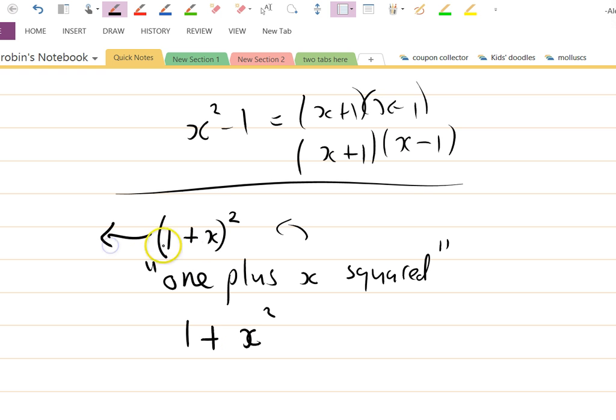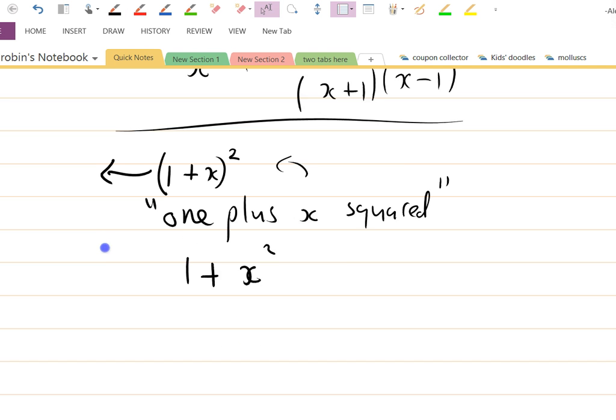Look, this one here is 1 plus x squared - 1 plus x all squared - and this one's 1 plus x squared, and these are different things. Different.